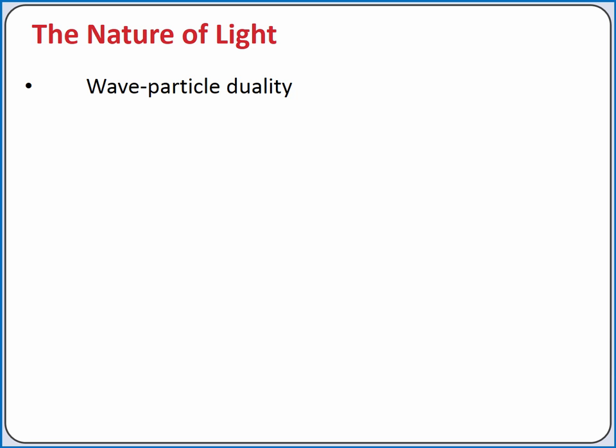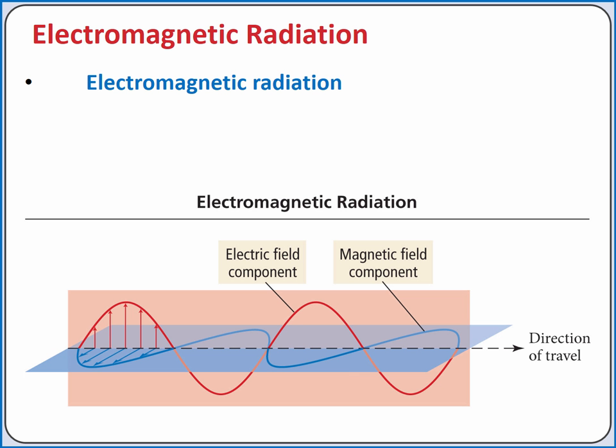Light exhibits a wave-particle duality, which means it can act like a wave or like a particle. Light is a form of electromagnetic radiation.